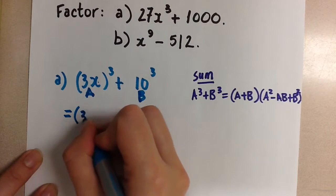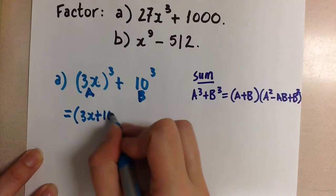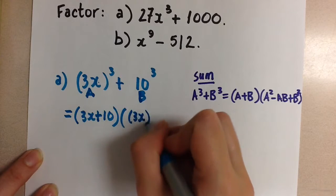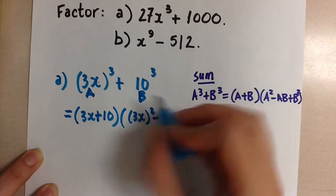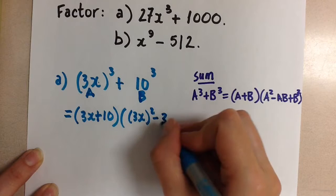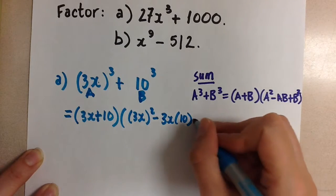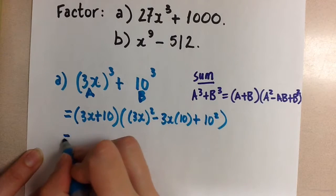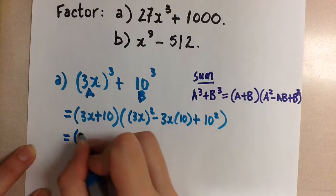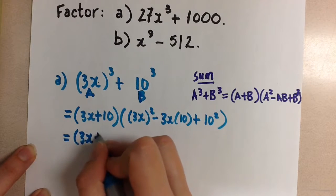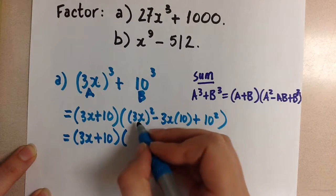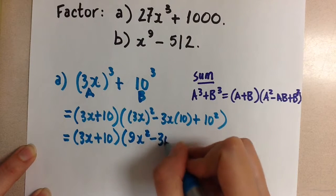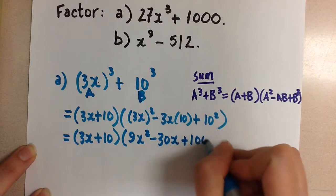And we'll get 3x plus 10 times 3x all squared, minus 3x times 10 plus 10 squared. Now let's evaluate the terms here. We'll have 3x plus 10 first, and here 9x squared minus 30x plus 100.